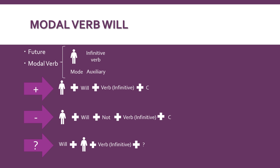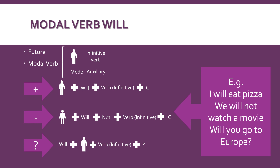For example: I will eat pizza. We will not watch a movie. Will you go to Europe? And also we can join those two words will and not, and we can say won't.